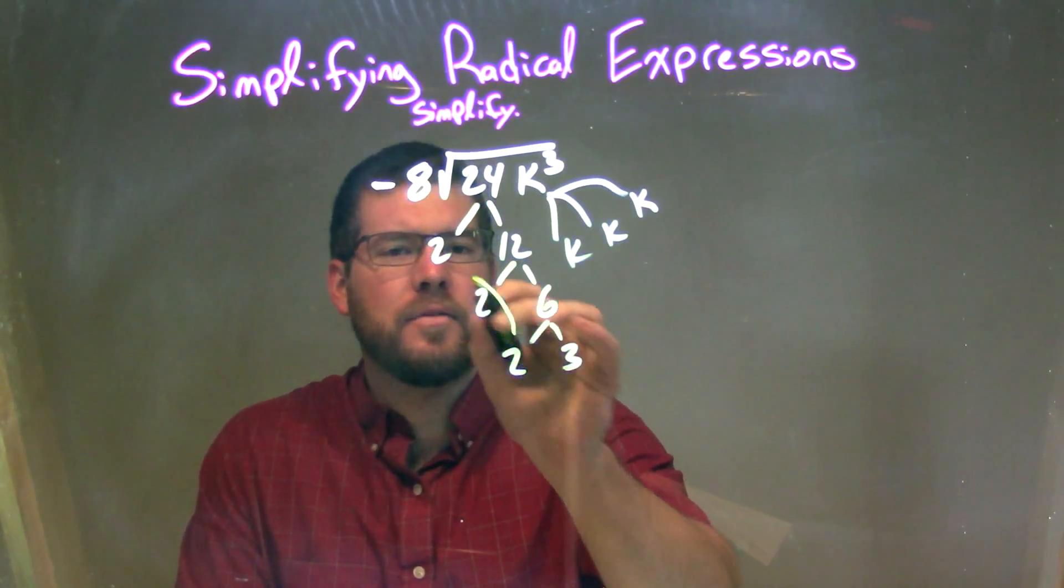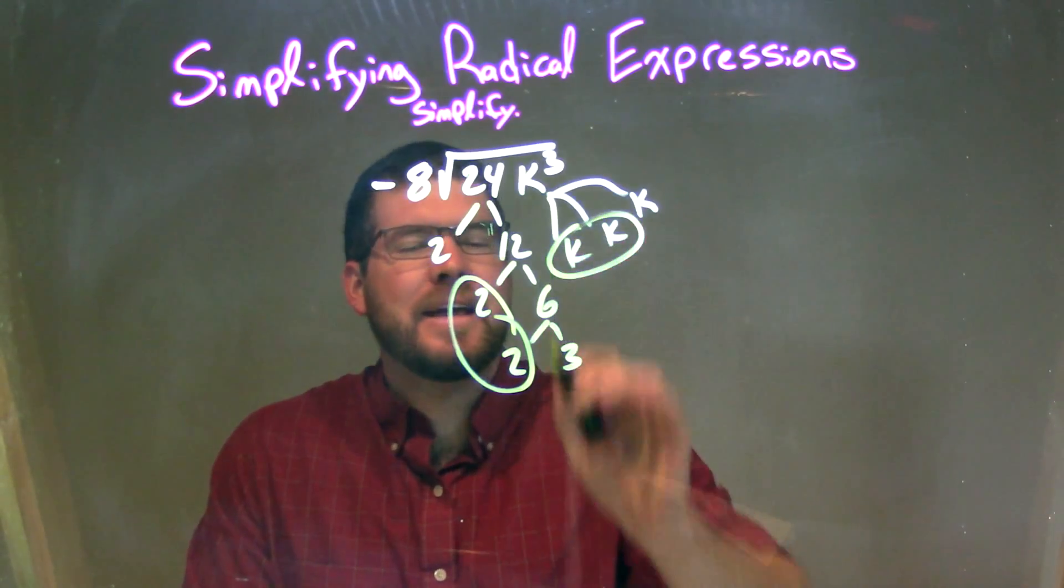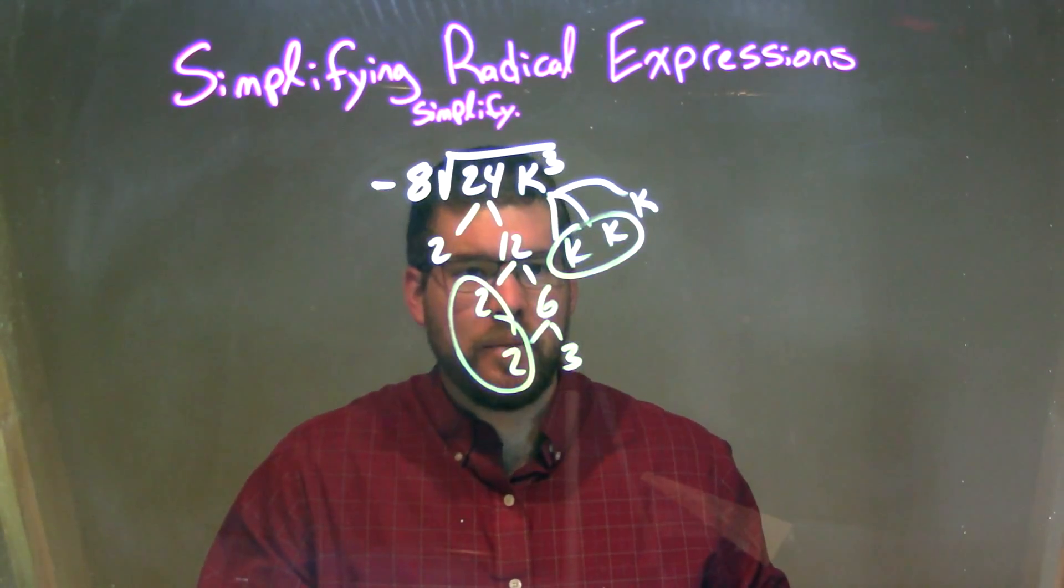So now let's circle our pairs. I see just a pair of 2s and a pair of ks. Everything else is just long ranges by itself.